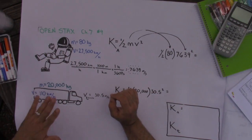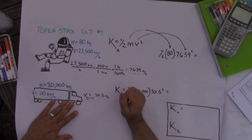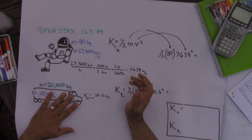For this problem, we had to compare the kinetic energy of two things. One was an 80 kilogram astronaut and the other one was a 20,000 kilogram truck. Well, at first glance, it would seem like the truck would certainly have a whole lot more kinetic energy, but we'll find otherwise.